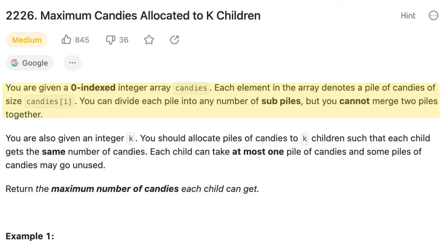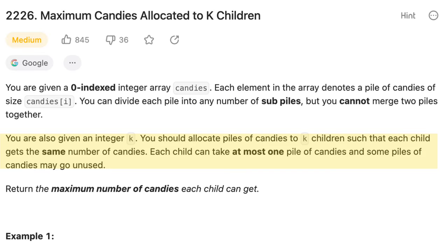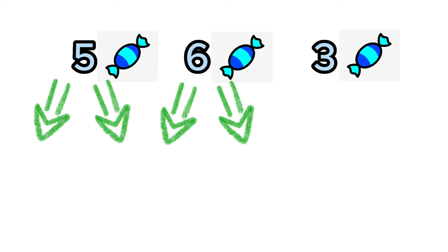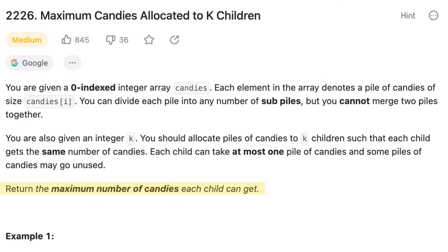Thus, a brute force algorithm that checks all potential strings will be sufficient to solve the problem. Let's do one final example. You are given a zero-indexed integer array candies. Each element in the array denotes a pile of candies of size candies i. You can divide each pile into any number of sub-piles, but you cannot merge two piles together. You are also given an integer k.